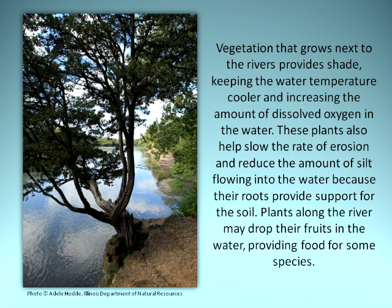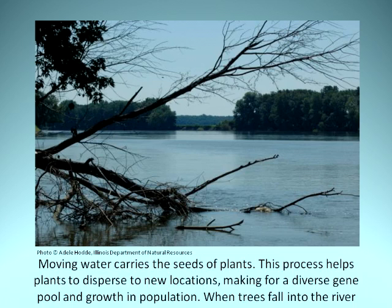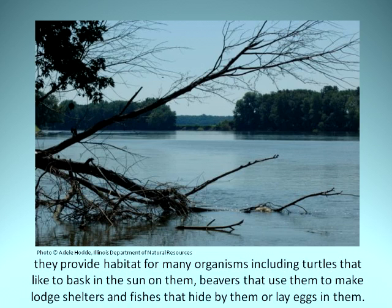Vegetation that grows next to the rivers provides shade, keeping the water temperature cooler and increasing the amount of dissolved oxygen in the water. These plants also help slow the rate of erosion and reduce the amount of silt flowing into the water because their roots provide support for the soil. Plants along the river may drop their fruits into the water, providing food for some species. Moving water carries the seeds of plants, helping them disperse to new locations, making for a diverse gene pool and population growth. When trees fall into the river, they provide habitat for many organisms, including turtles that like to bask in the sun on them, beavers that use them to make lodge shelters, and fishes that hide by them or lay eggs in them.